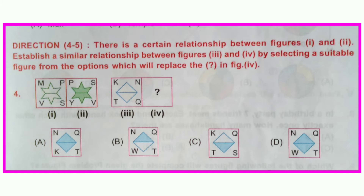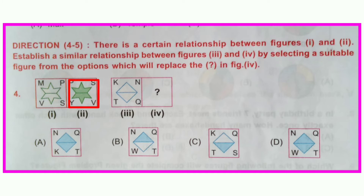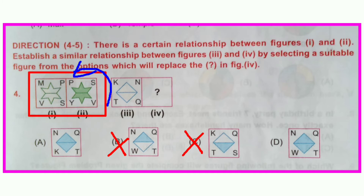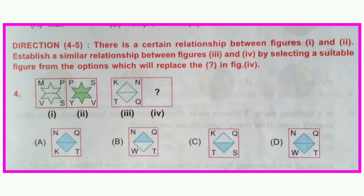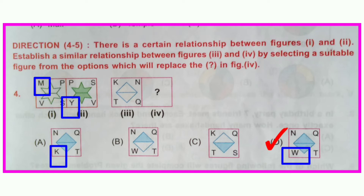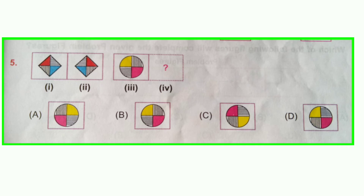Questions four and five: There is a certain relationship between figure one and two — establish a relationship between figure three and four by selecting a suitable figure from the options to replace the question mark. Figure one is not colored whereas figure two is colored, so we need a colored figure — options B and C are cancelled; A and D remain. In figure one, letters V, S, and P move anti-clockwise one step. Looking at figure three, letters T, Q, N need to move anti-clockwise one step — options A and D are both correct so far. But the remaining letter M in figure one changes to Y, so in figure three, K must change to another letter. In option D, K changes to W. So option D is correct; A is cancelled.